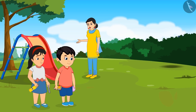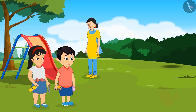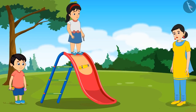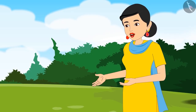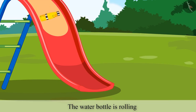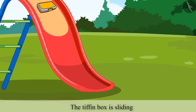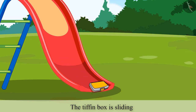'Chotu and Pinky, both of you bring the objects here and then push them one by one off the swing to see if it is rolling or sliding.' Just see — the water bottle just rolled and fell down, and Chotu's tiffin box came down sliding.